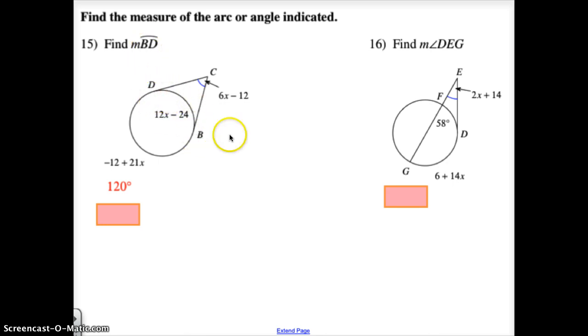In number 16 we have a tangent and a secant and with that example we're going to take the difference of 58 and 6x plus 14x, divide them both by two, and then set that equal to 2x plus 14. When you do that to find the measure of angle deg, you're going to find that that angle is 30 degrees.